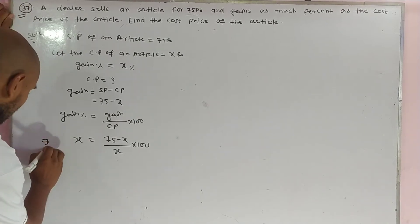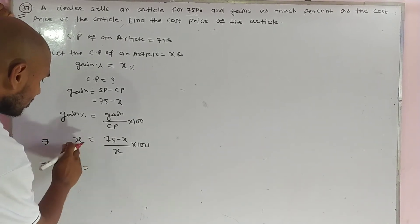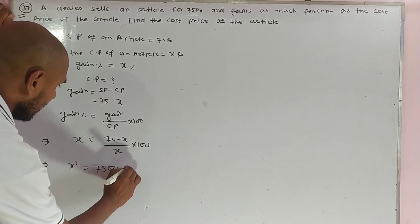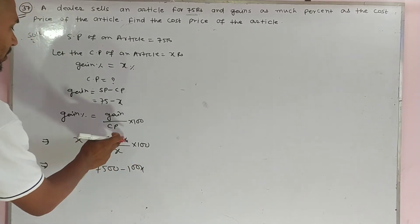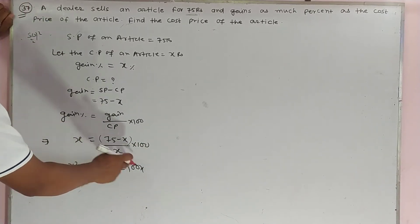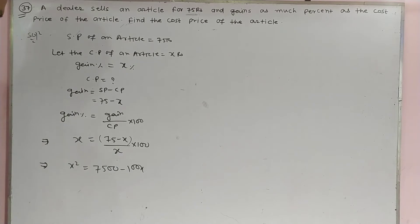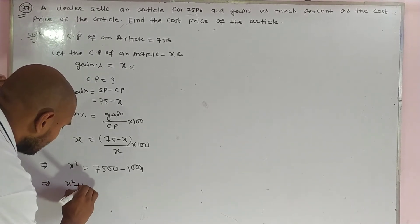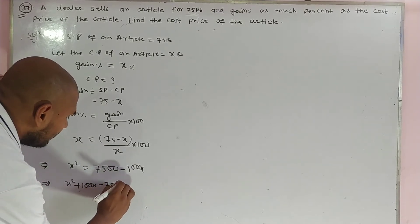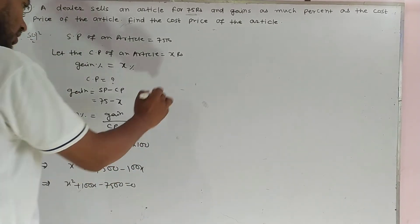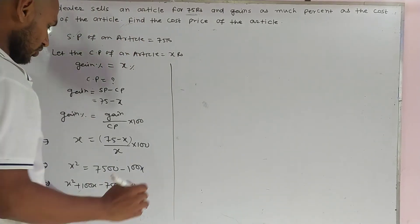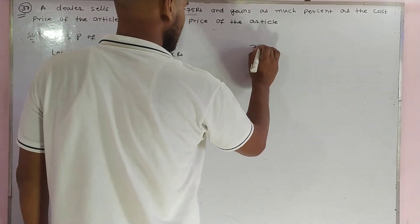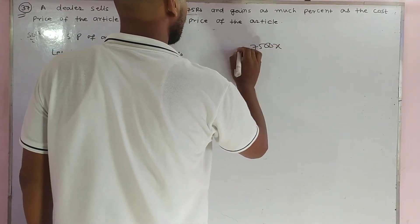As you solve this equation, we get a quadratic equation: x squared plus 100x minus 7500 equals 0.